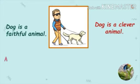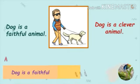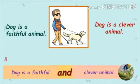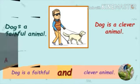Here we are talking about the dog and its qualities. When we join these two sentences, our answer would be: Dog is a faithful and clever animal. Here the conjunction we used is AND to join these two sentences.